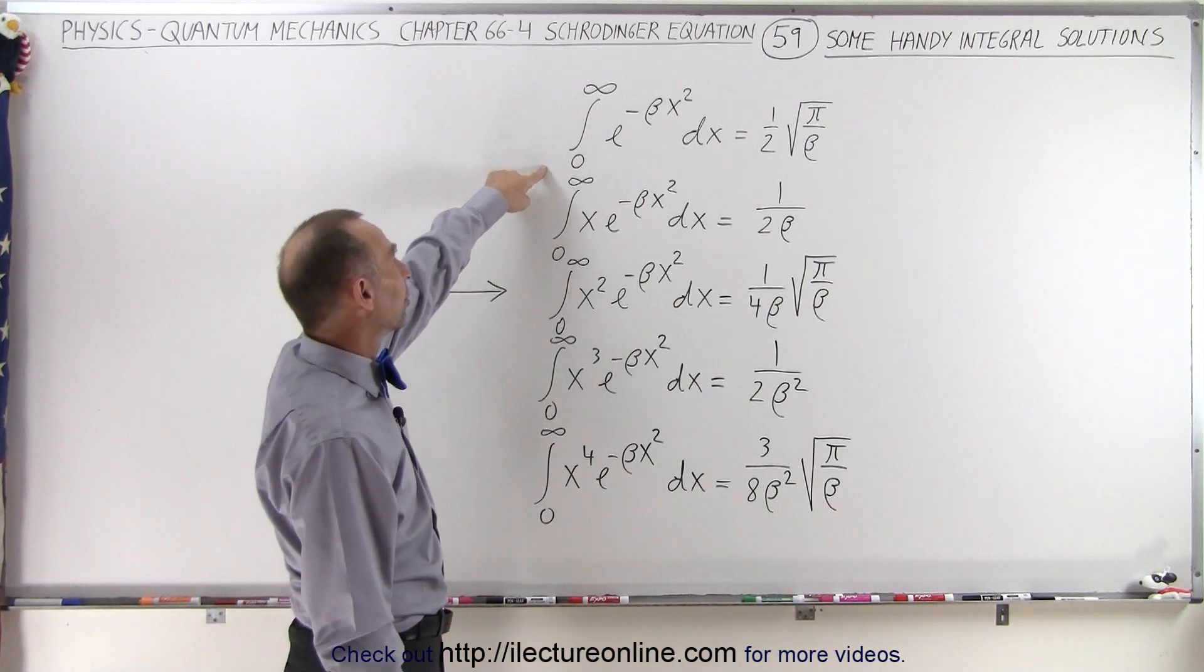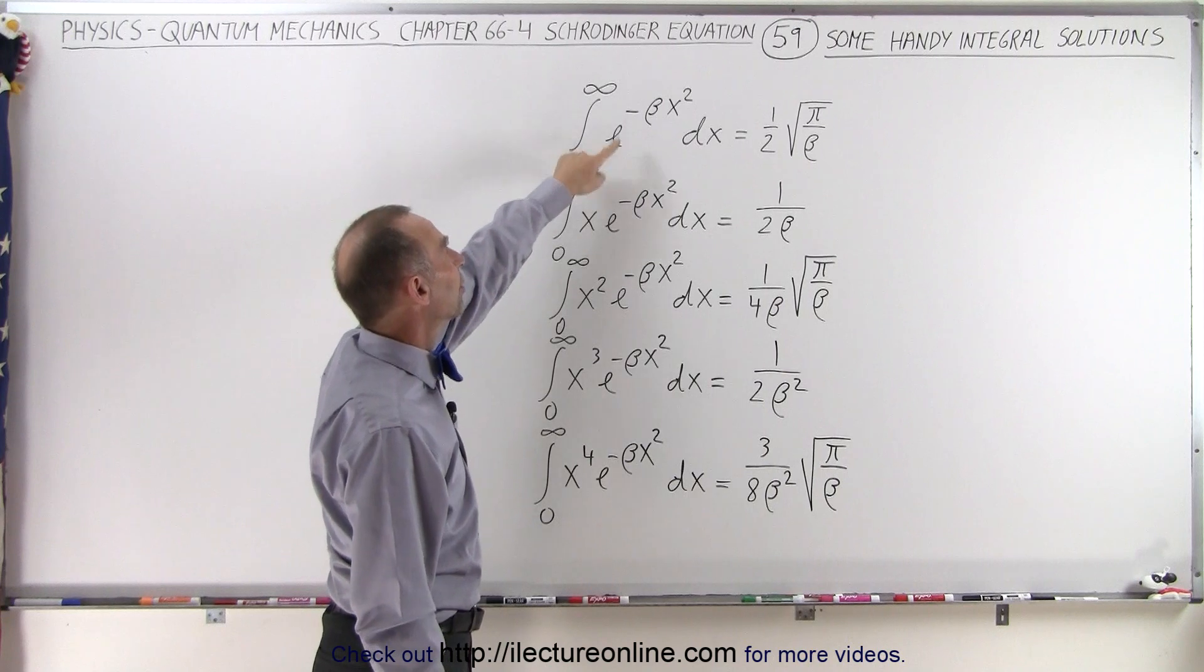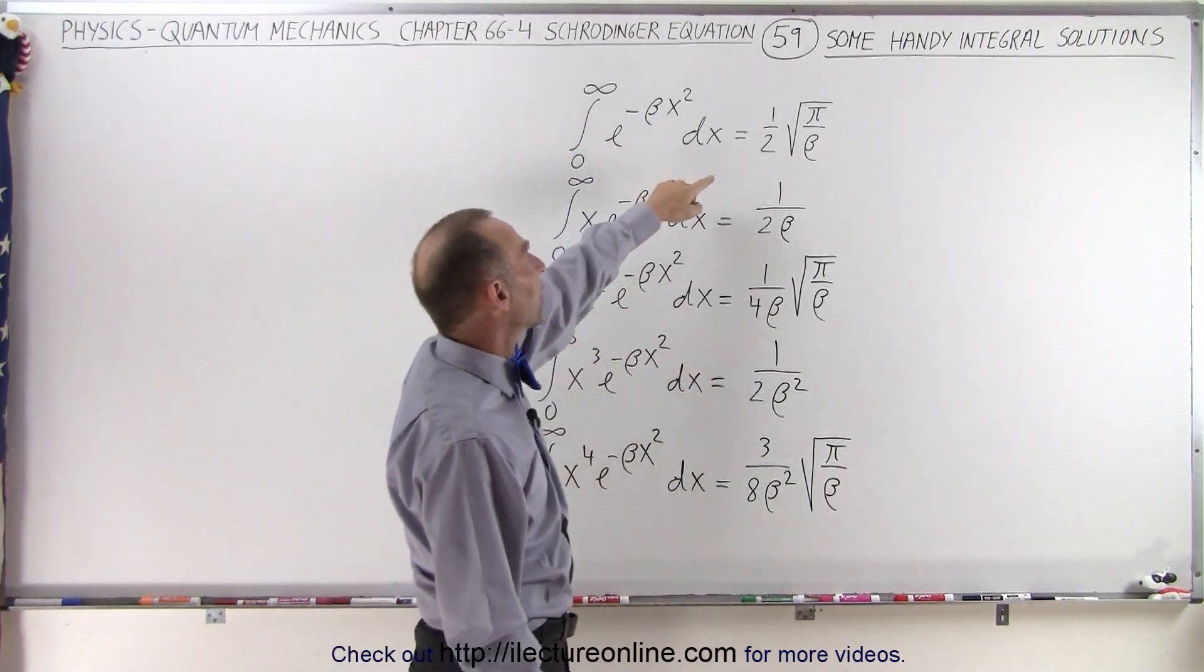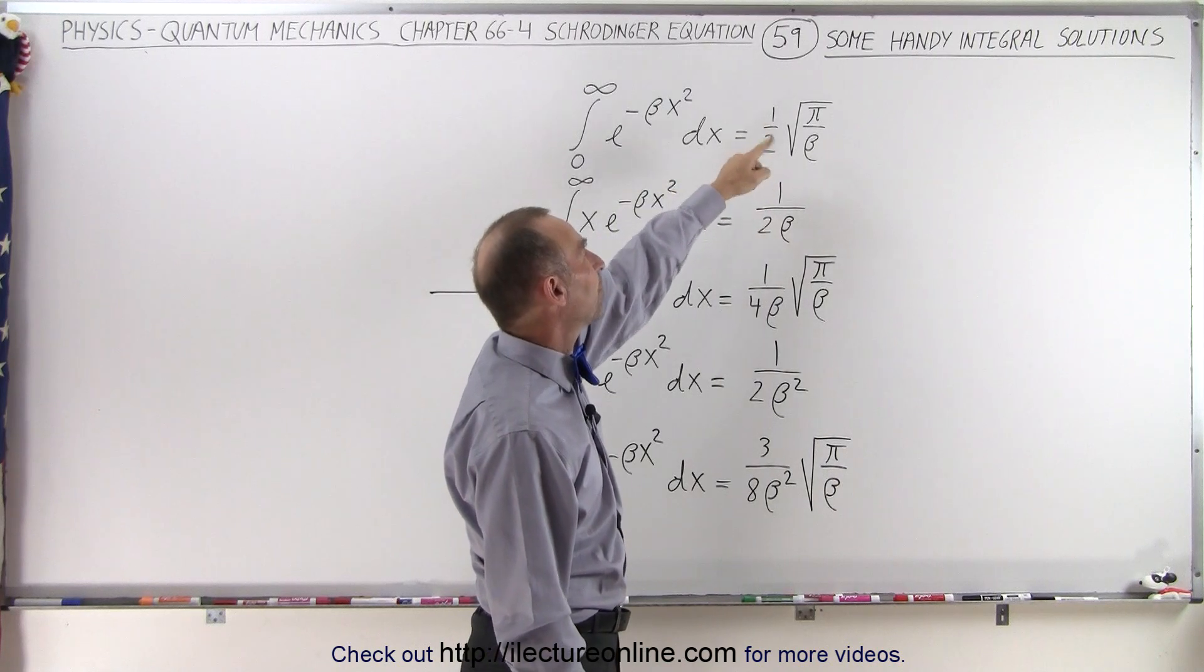But for example, the integral from 0 to infinity of e to the minus beta x squared, beta some sort of constant, times dx is equal to 1 half the square root of pi over beta.